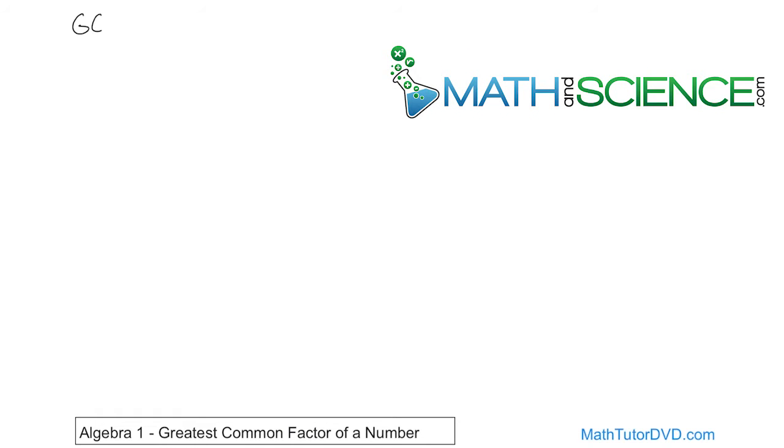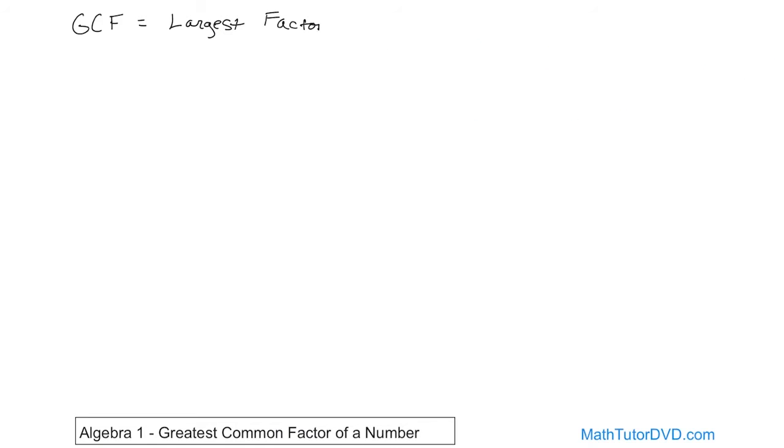So we call it the GCF, the greatest common factor. Basically what it is, is the largest factor that is common to two numbers. Just like before with prime numbers, the definition will be really easy to understand once we do an example.